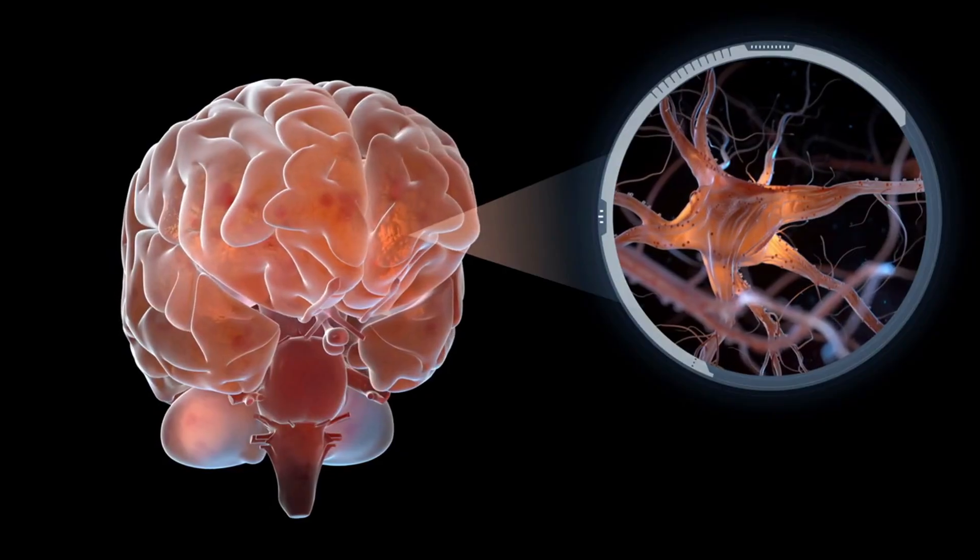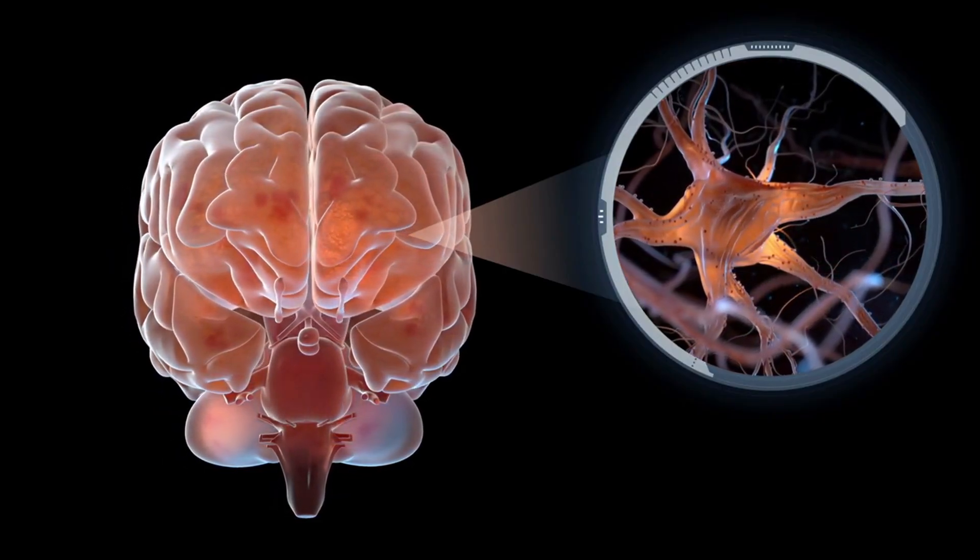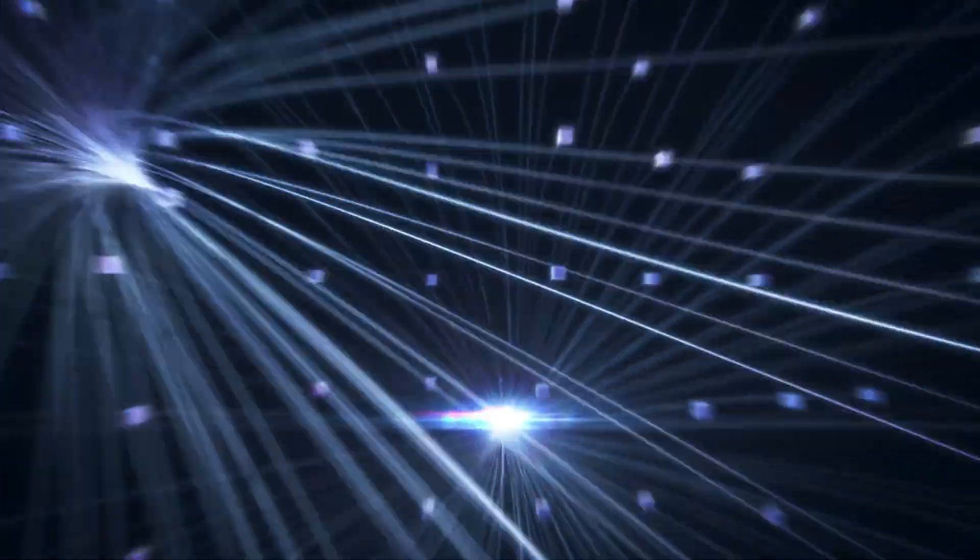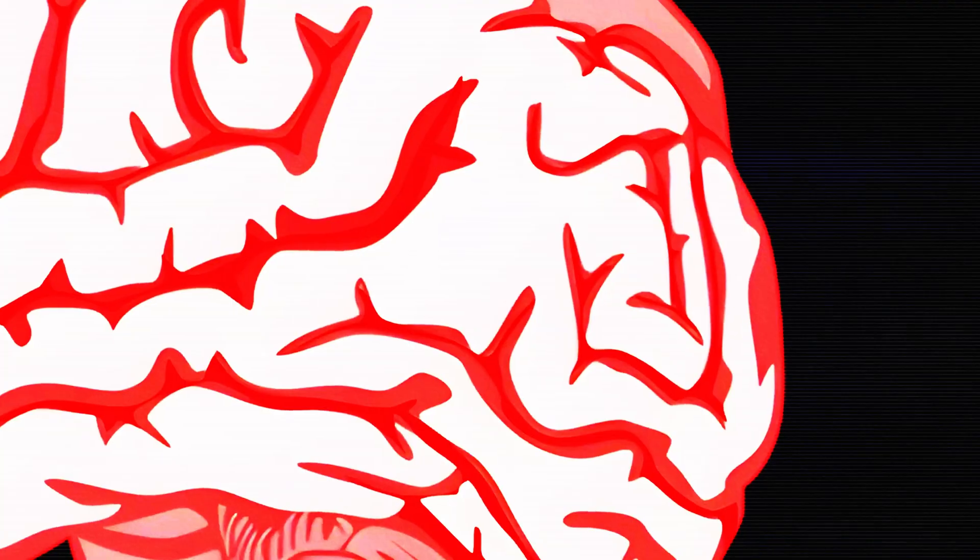Blindsight will feed that data directly into the visual cortex, bypassing the eyes, optic nerve, and everything in between. Your eyes could be completely destroyed, or never have existed, and Neuralink could still plug you into the visual world. It's not restoring vision, it's installing it.